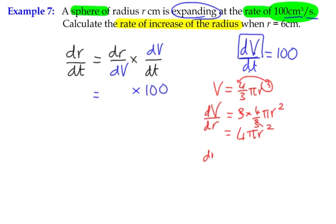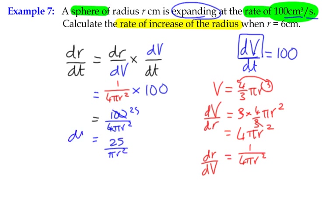Unfortunately, we're looking for dr/dV, so we can represent that by the inverse of 4π r², which is 1 over 4π r². Put that in there - 1 over 4π r². We can simplify that to give us 100 over 4π r², or 25 over π r².